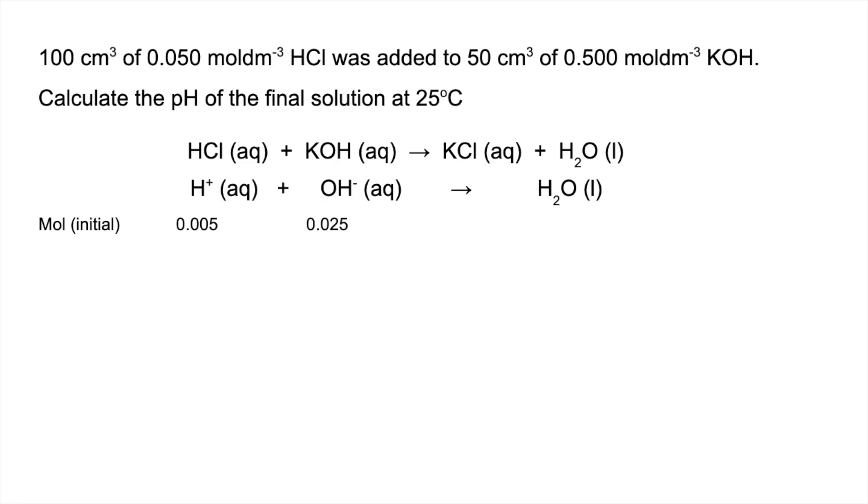Initial moles of H+ 0.005 moles, of OH- 0.025. So this time the OH- ions are in excess, so the final moles of H+ will be zero and the final moles of OH- are 0.02.